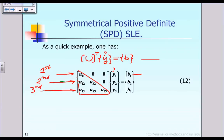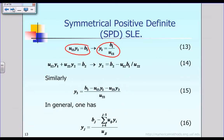If you look at the second equation, it is u12 times y1 plus u22 times y2 plus 0 times y3 equal to b2. From that second equation, this is exactly what we have as indicated in equation 14, from which we are able to solve for the unknown y2.